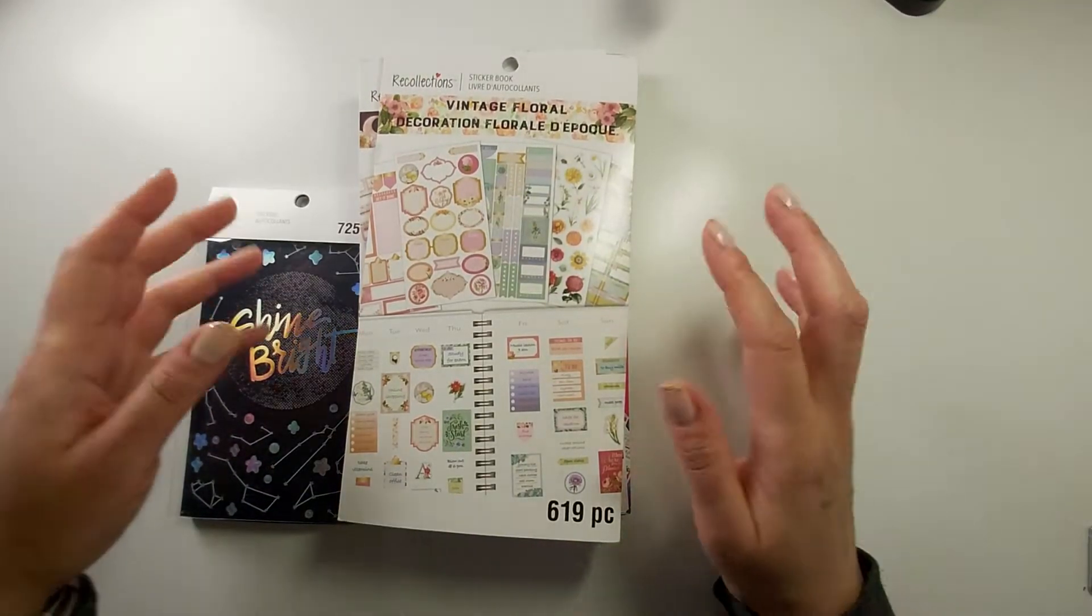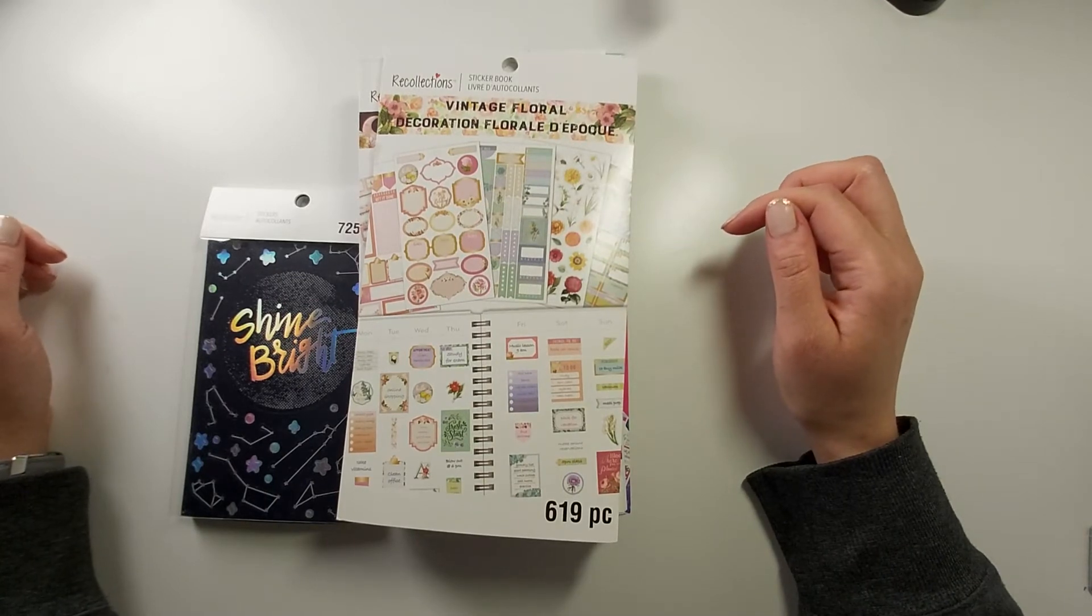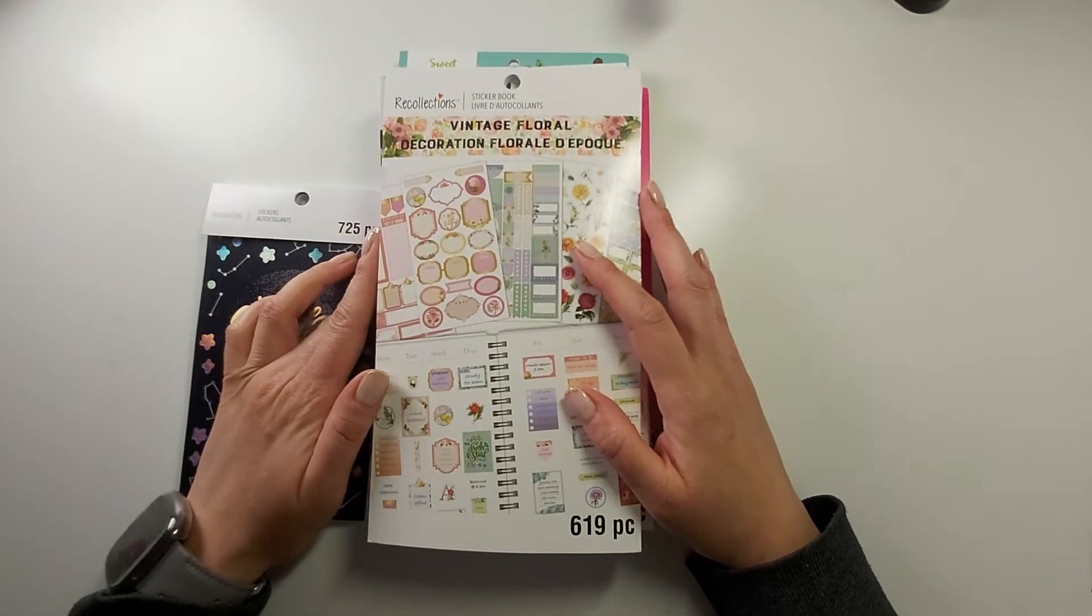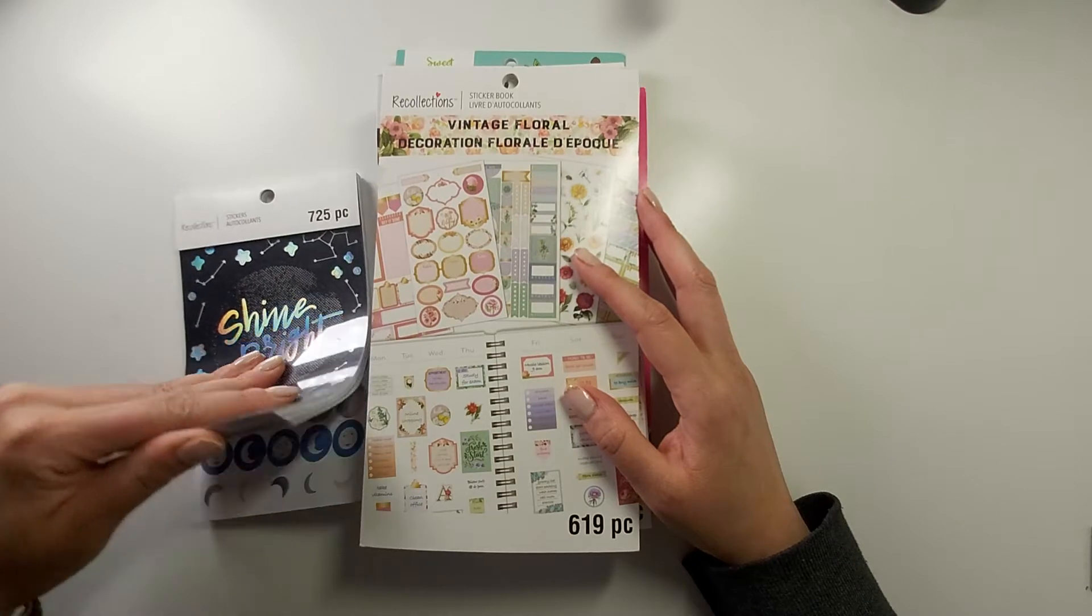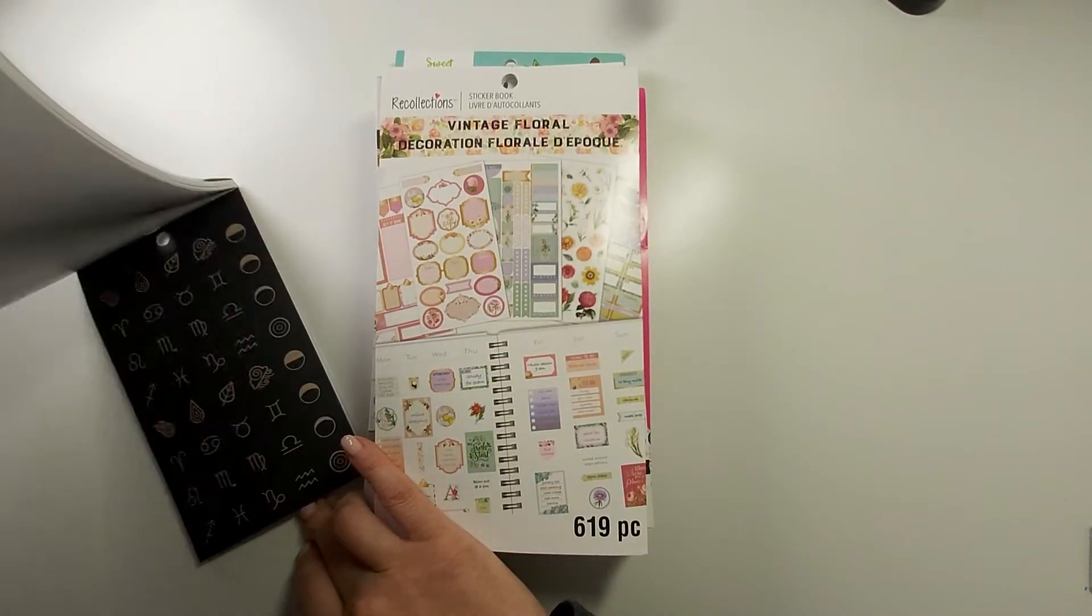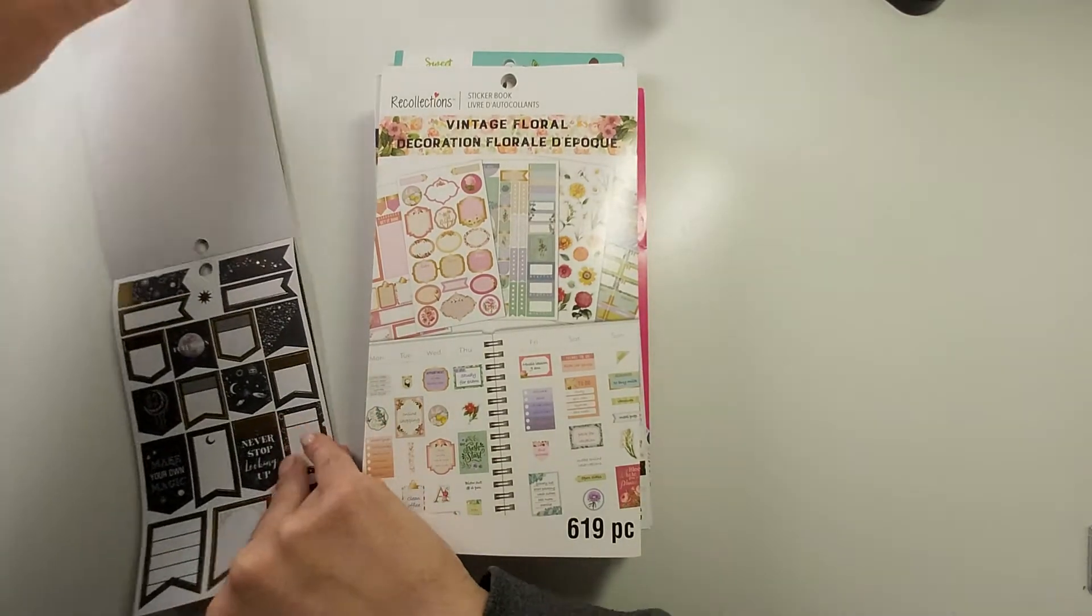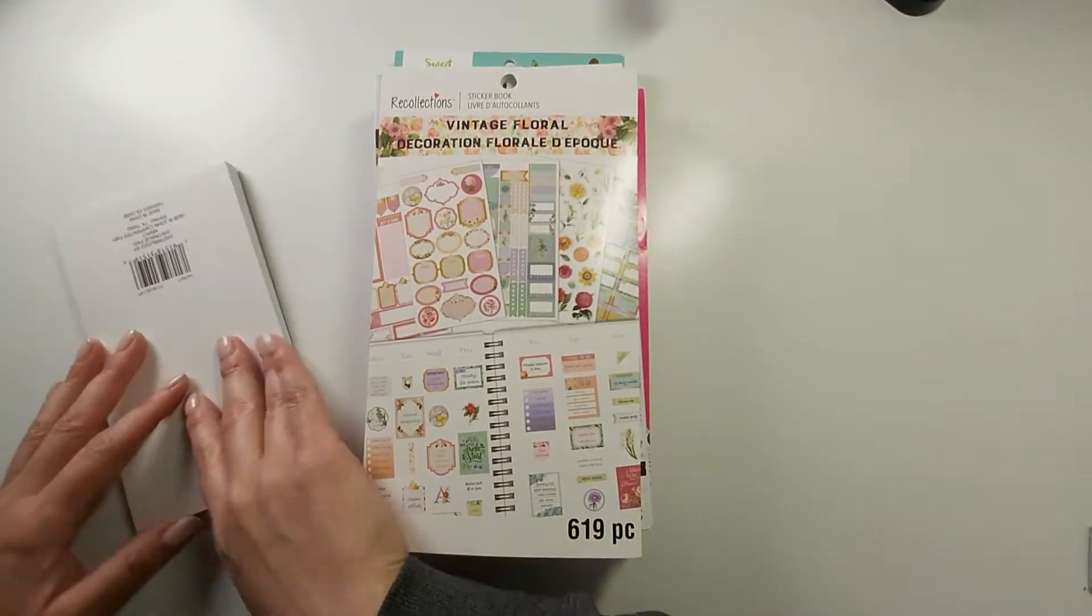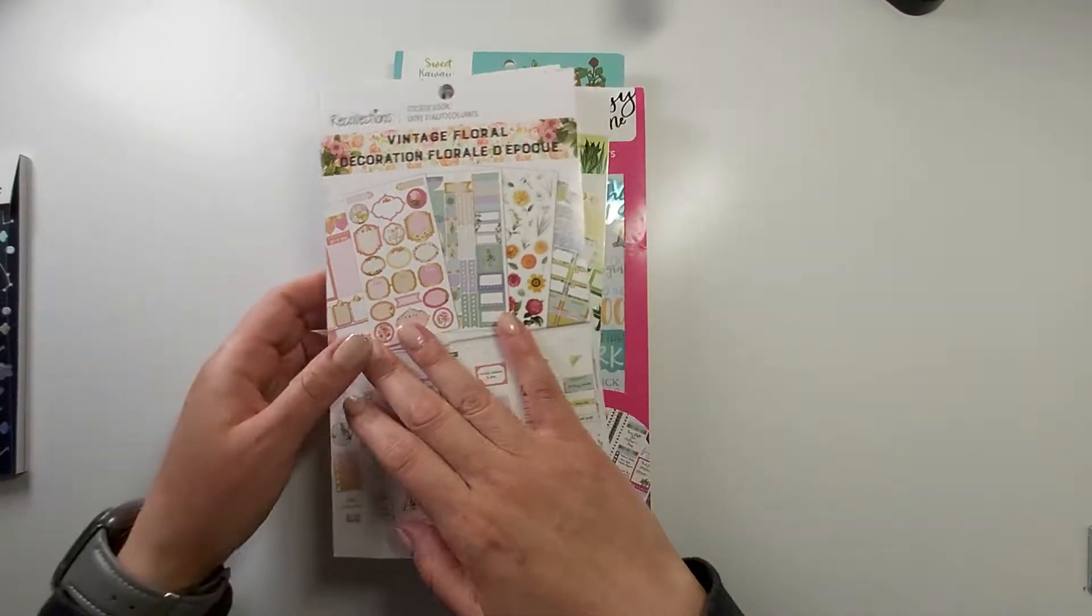Hey everyone, I got some new sticker books from Michaels and wanted to go through those. This is an old one but it kind of matches the new celestial one that I'll show you. It's an oldie but a goodie. The stickers are a little bit thicker - I think these are more for scrapbooking, they're a little tiny bit thicker than regular stickers for your planner.